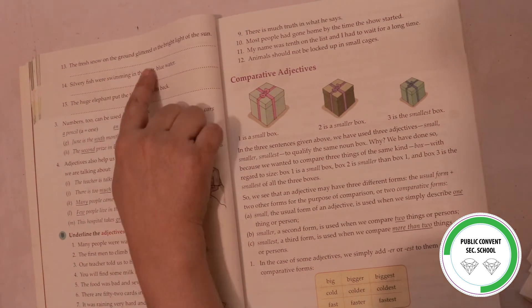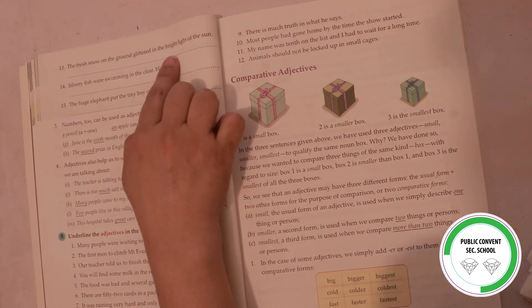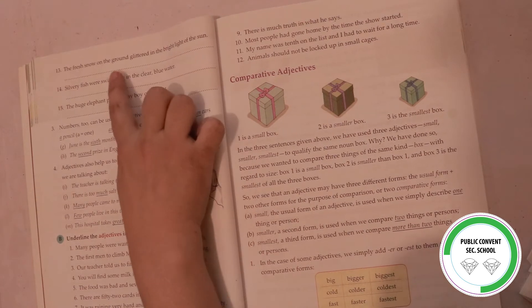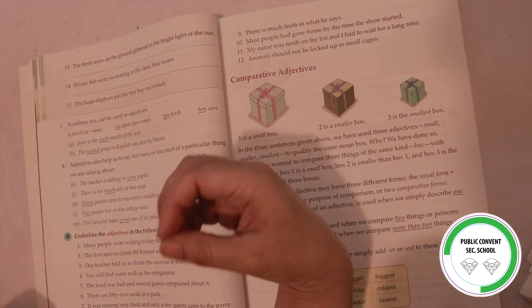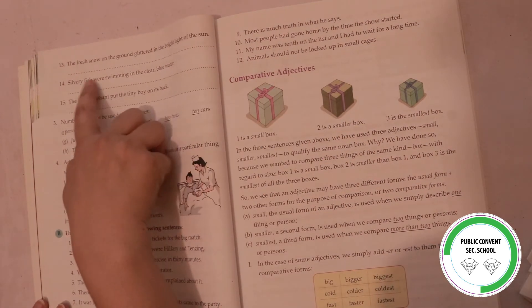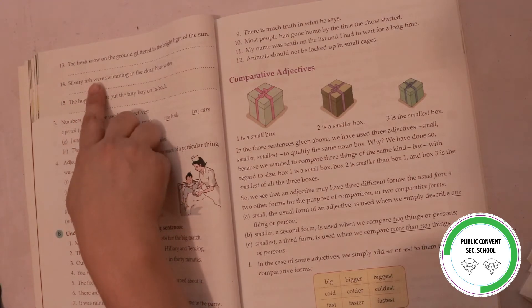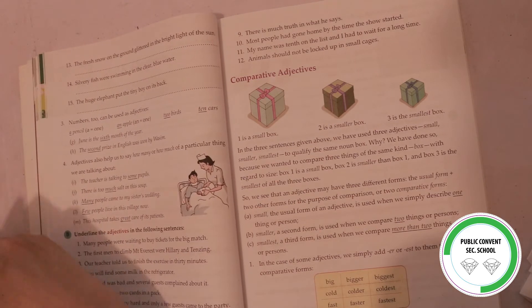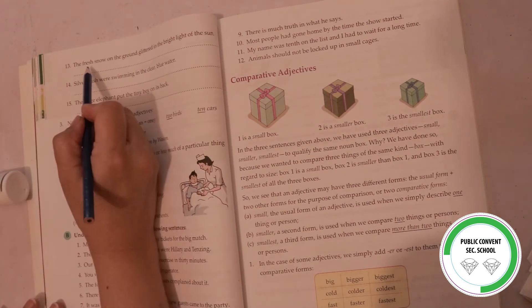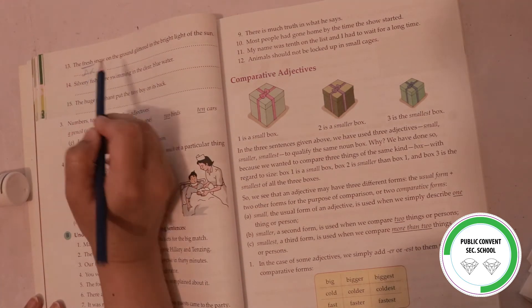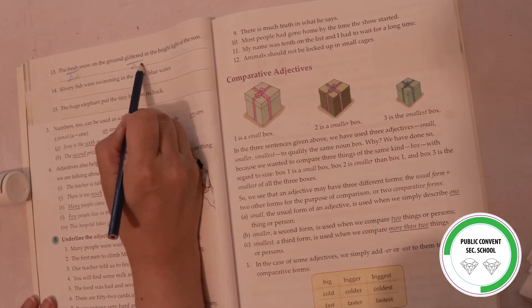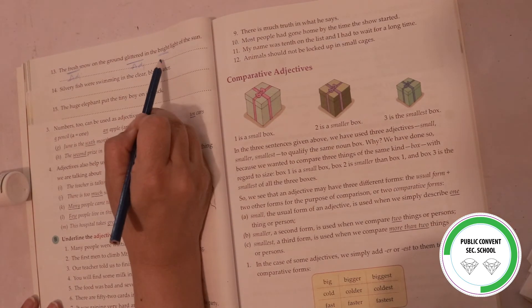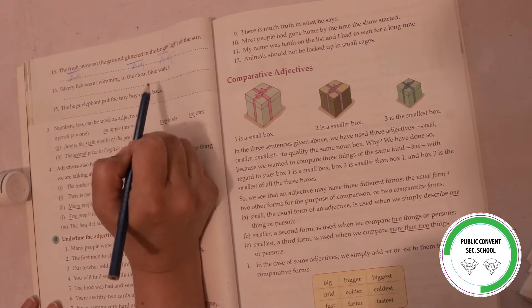The fresh snow on the ground glittered in the bright light of the sun. Glitter, shine - glitter is the adjective. Fresh is the adjective, glittered is the adjective, bright is the adjective. Okay.